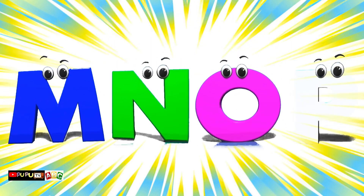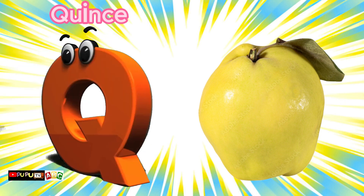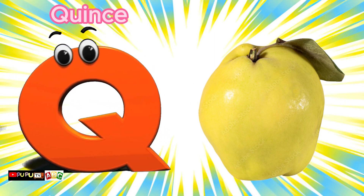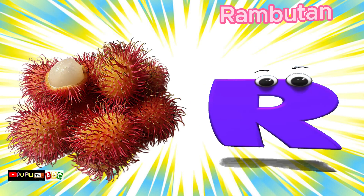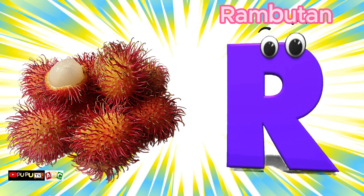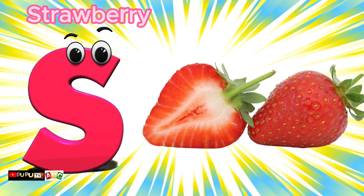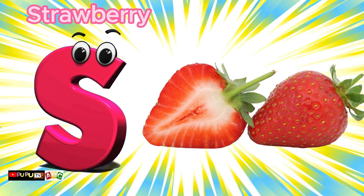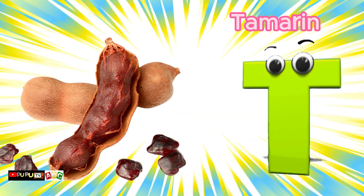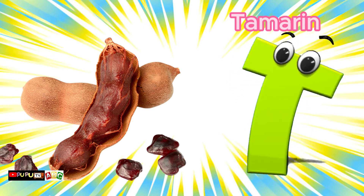Q is for Quince, qu-qu-Quince. R is for Rambutan, R-R-R-Rambutan. S is for Strawberry, S-S-Strawberry. T is for Tamarind, T-T-T-Tamarind.